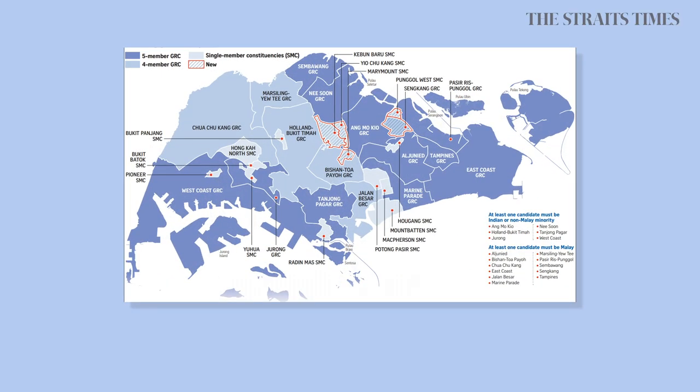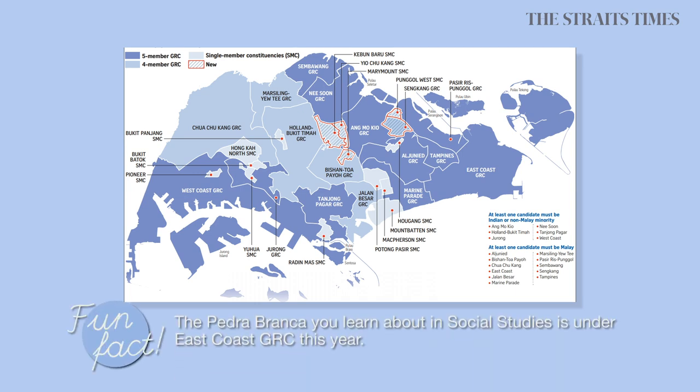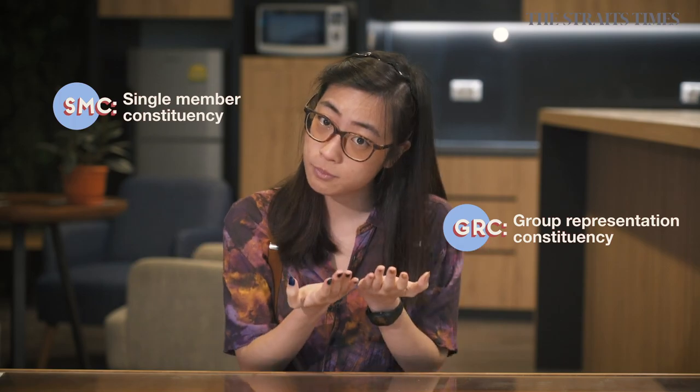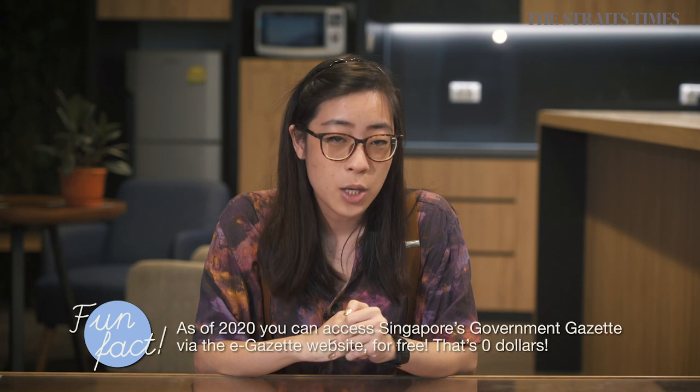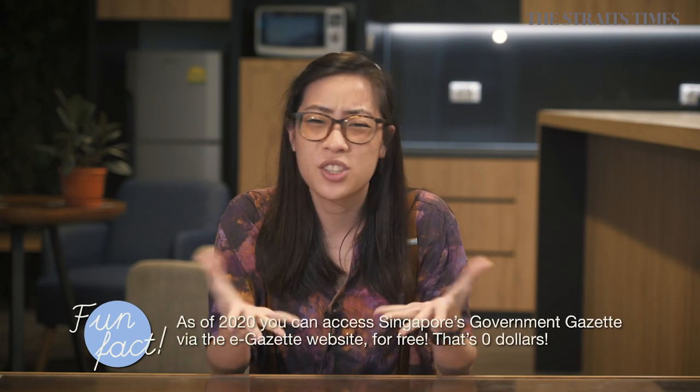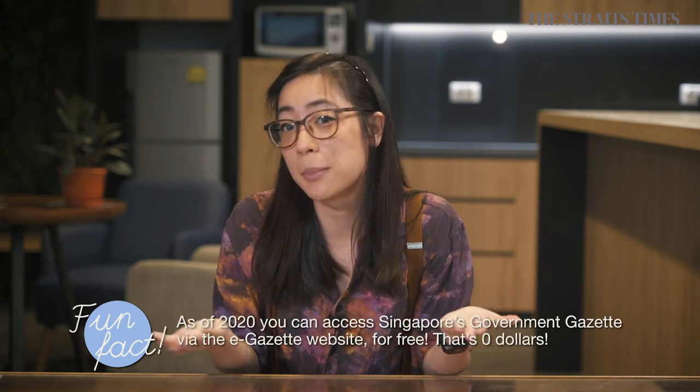This is what the constituencies look like in 2020. From this map, you can see that there's something called an SMC and a GRC. An SMC means you're voting for one member, and a GRC means you're voting for a group. Whether your area becomes an SMC or a GRC, and how many people are in that GRC, all depends on the boundaries that are redrawn each time. These boundaries are announced in the Government Gazette, which is an official journal that publishes legal and public information.